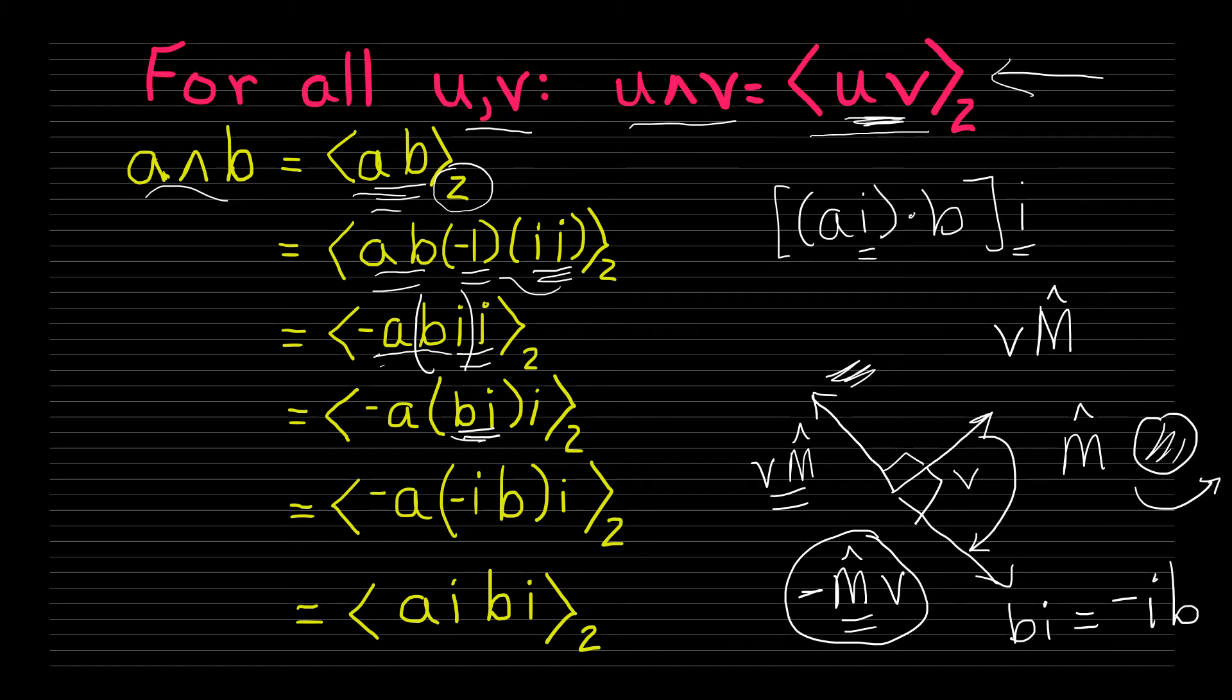So our bi that we had here Peter rewrote as negative ib. And what he accomplished by this was that before our two i's were off on the end here, and now he's moved one of them to the middle where we need it in the thing that we're trying to prove.